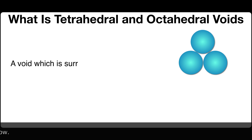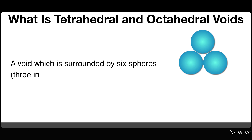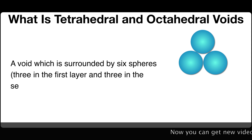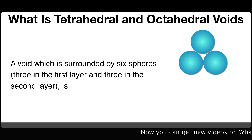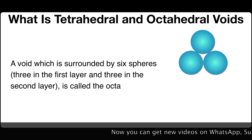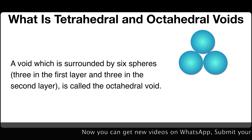A void which is surrounded by six spheres — three in the first layer and three in the second layer — is called the octahedral void.